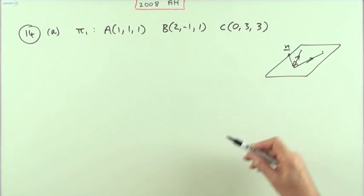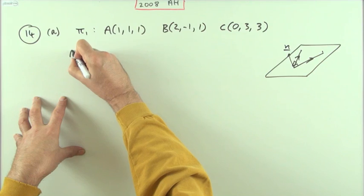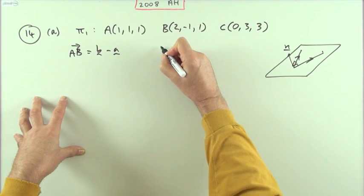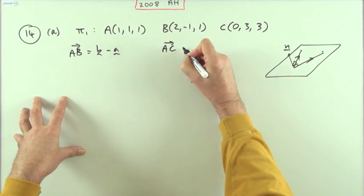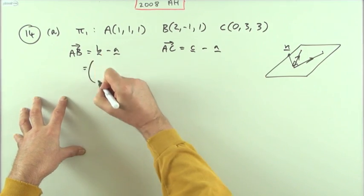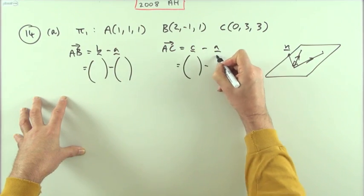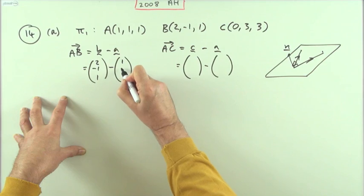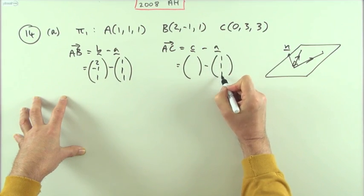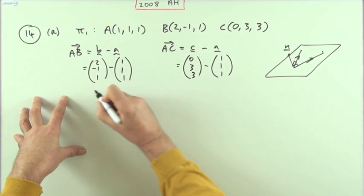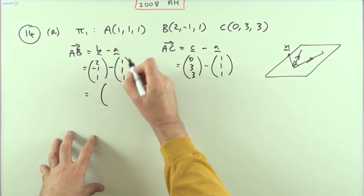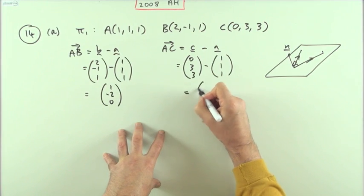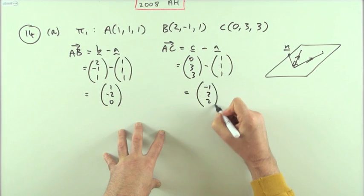So the first thing is I need two vectors that lie in it. AB and AC will do. I'll work out AB and AC by subtracting the position vectors. For B I've got (2, −1, 1), for A I've got (1, 1, 1), and for C I've got (0, 3, 3). So AB tidies up to (1, −2, 0) and AC gives (−1, 2, 2).